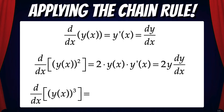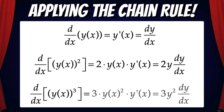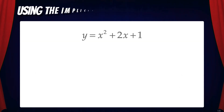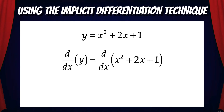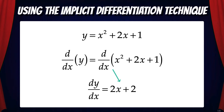Similarly, if we want to find the derivative of y of x cubed, we apply the chain rule, which gives us 3y of x squared times y prime of x — the same as 3y squared times dy/dx. So for an explicit function like y equals x squared plus 2x plus 1, to find the derivative we take d/dx of both sides. d/dx of y is just dy/dx, and d/dx of x squared plus 2x plus 1 is 2x plus 2, so dy/dx equals 2x plus 2.